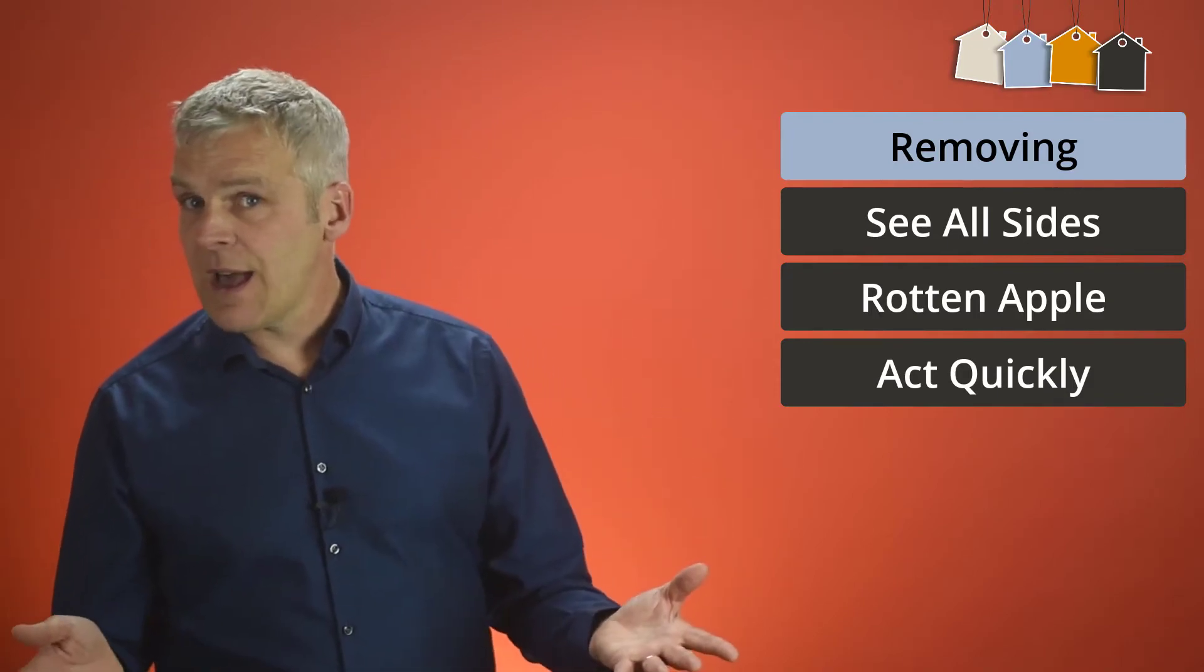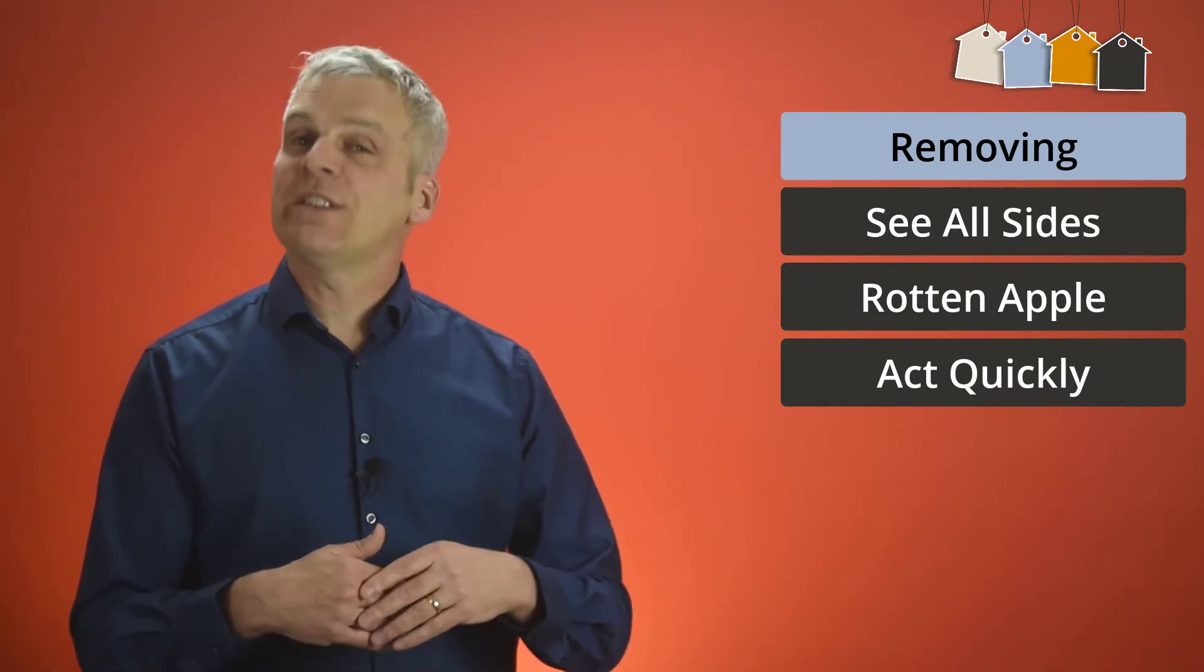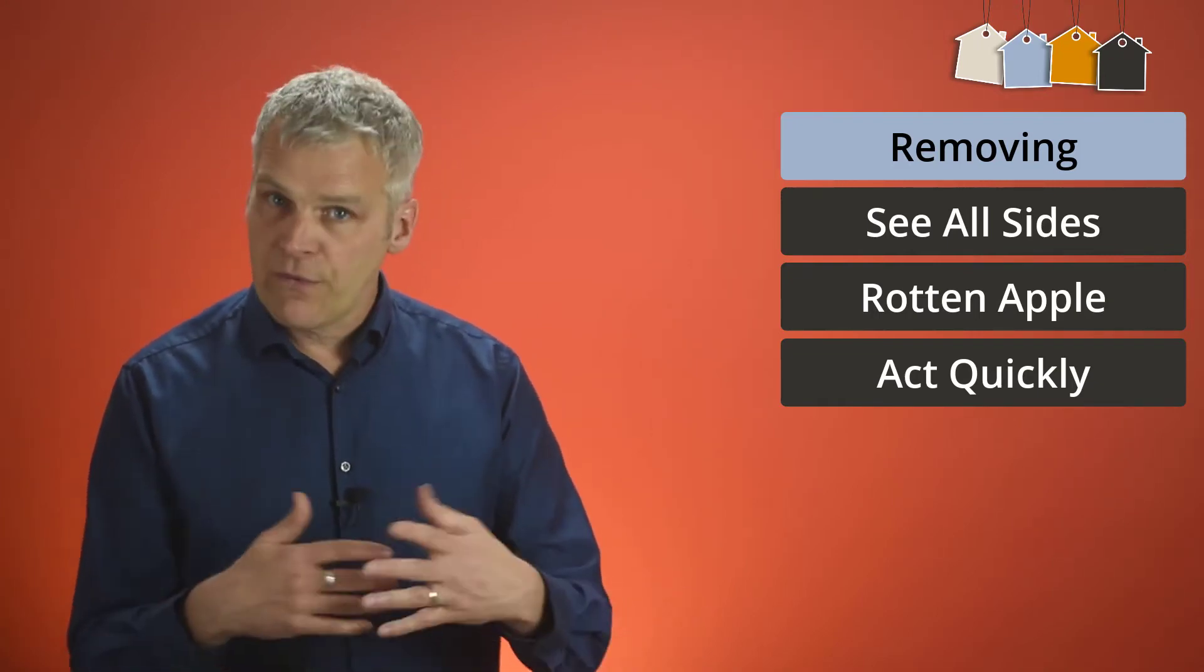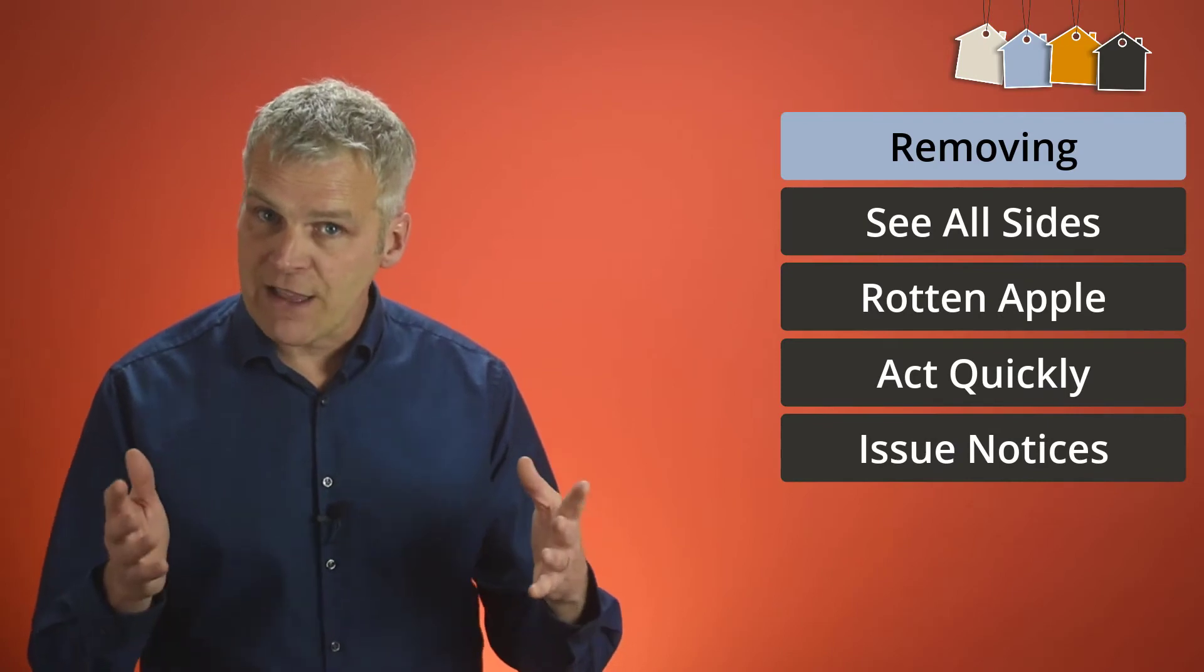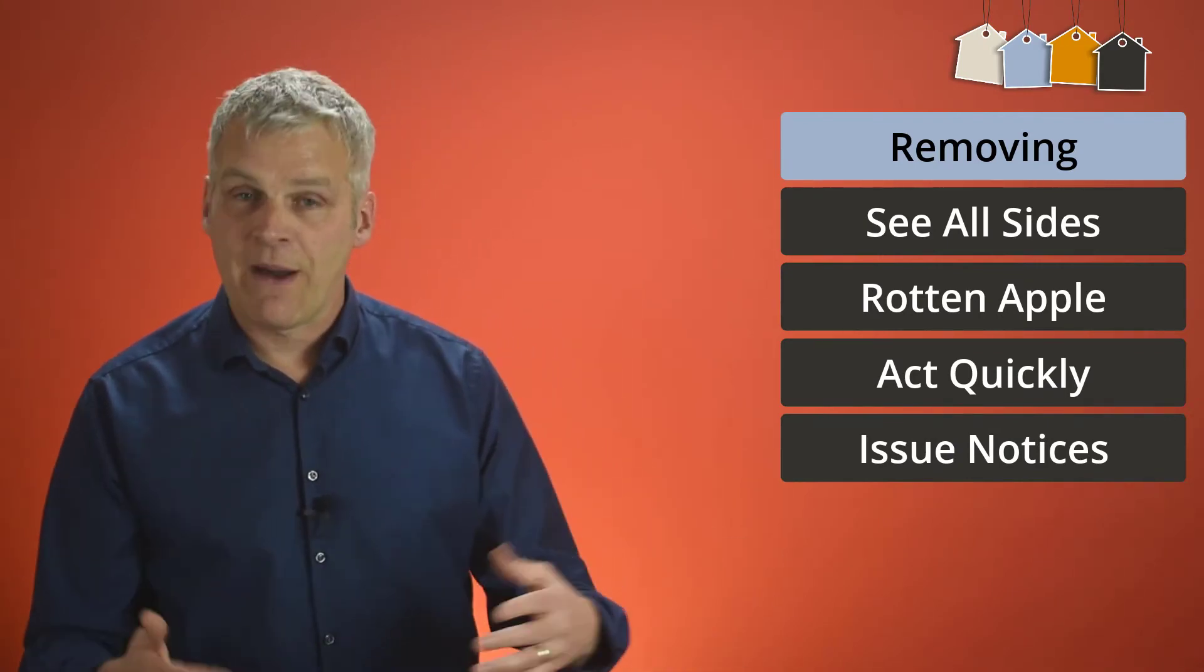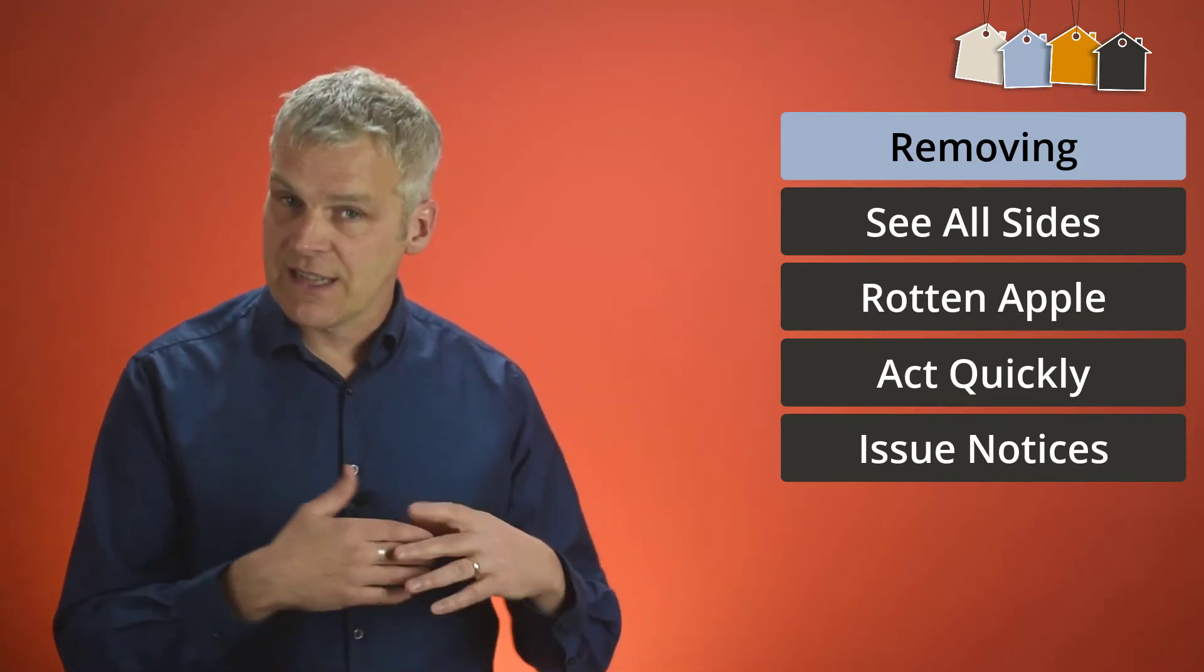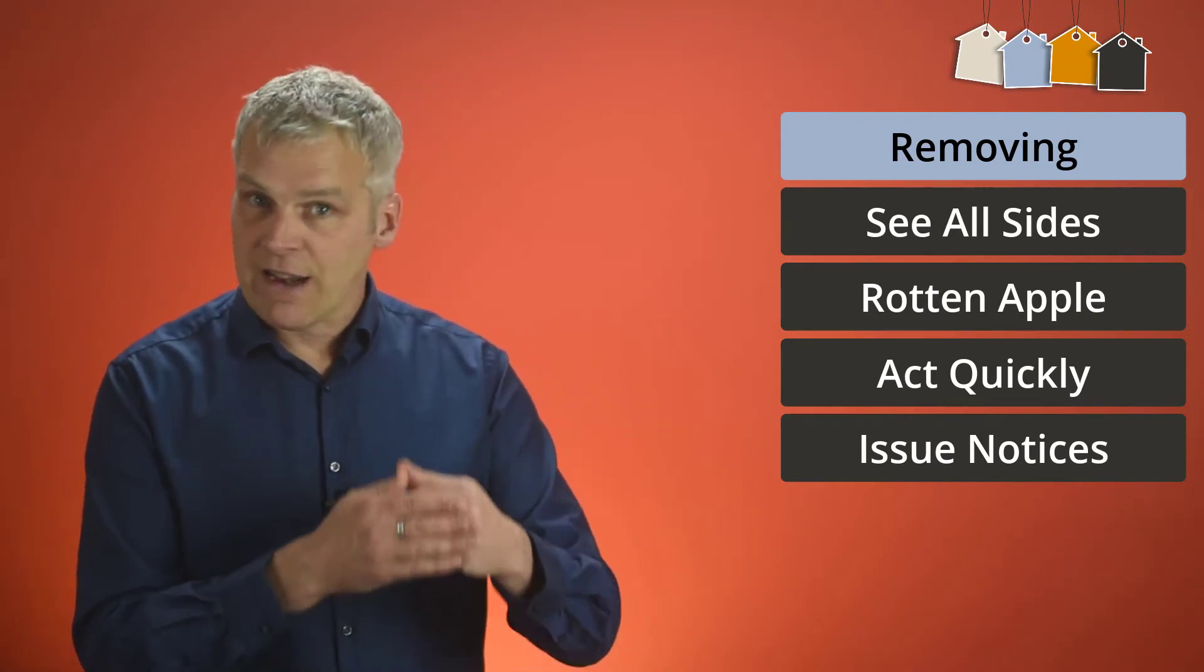Now if you're not able to do that, if for whatever reason you can't resolve the situation, you obviously have to go through a formal eviction process. You need to issue the correct notices, and I'll put some links in the box below that will talk to you all about how you can do that, but you've got to do this properly. You've got to issue the correct notices to get that tenant out in the correct legal way.